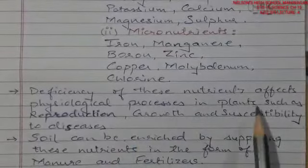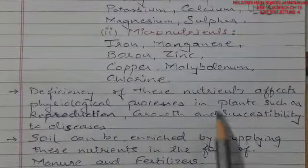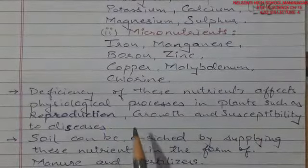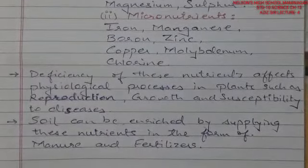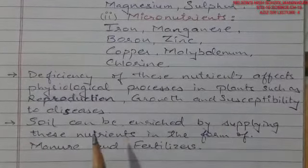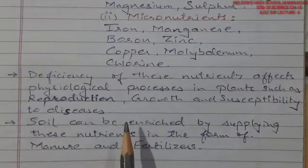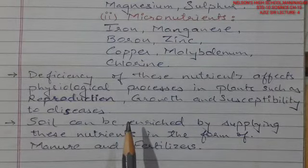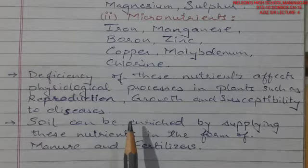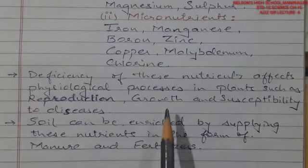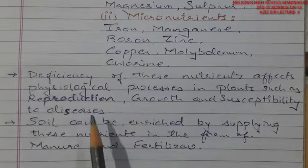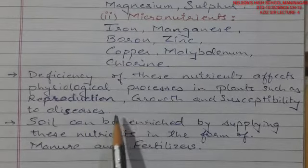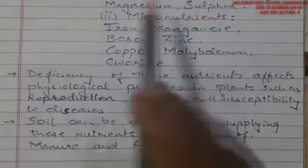Deficiency of these nutrients affects physiological processes in plants, such as lower reproduction rate, lower growth, and increased susceptibility to disease — meaning they become easily prey to disease. Growth and production of plants gets extremely affected due to this nutrient deficiency.